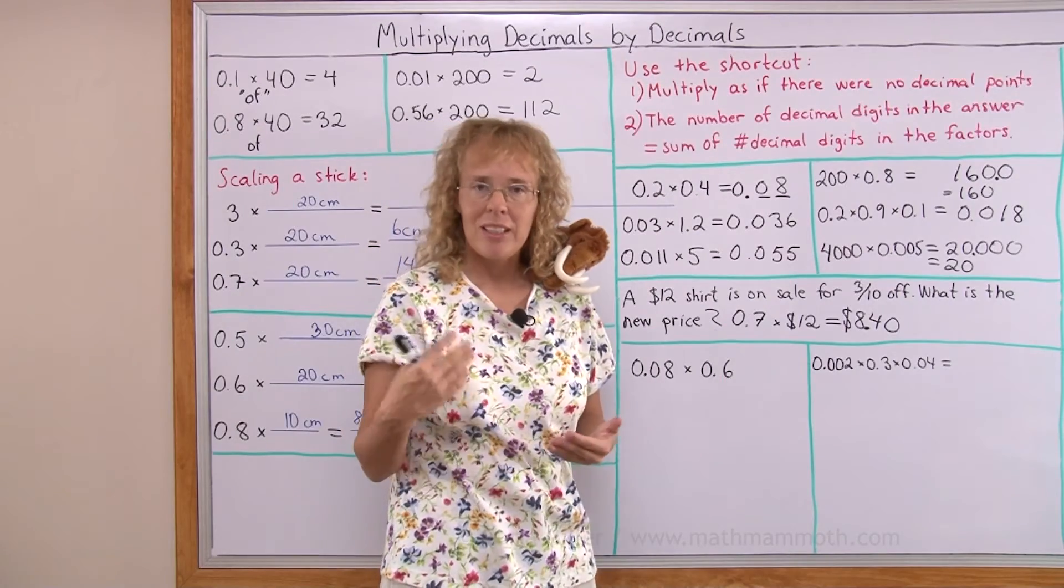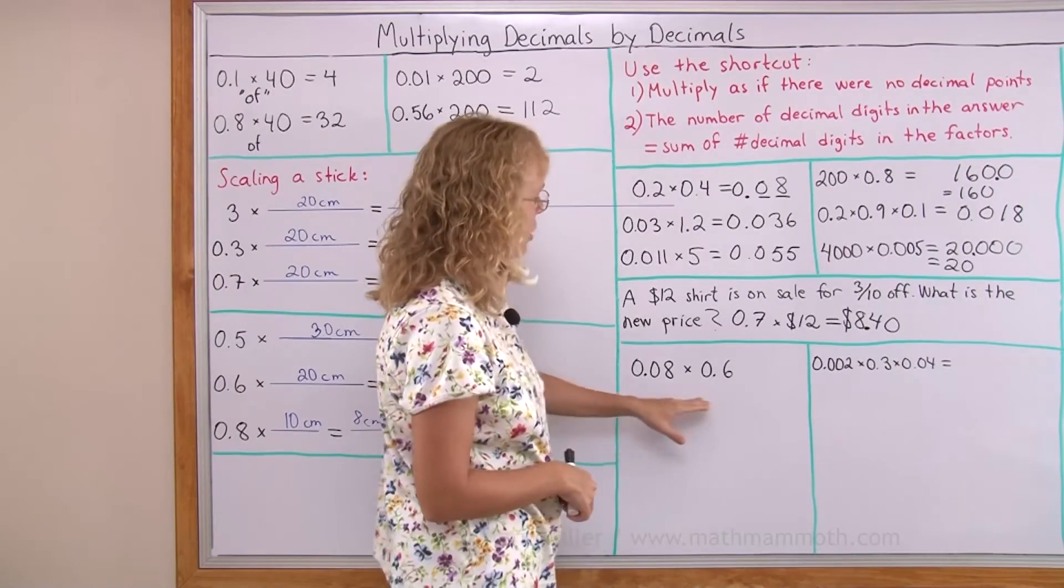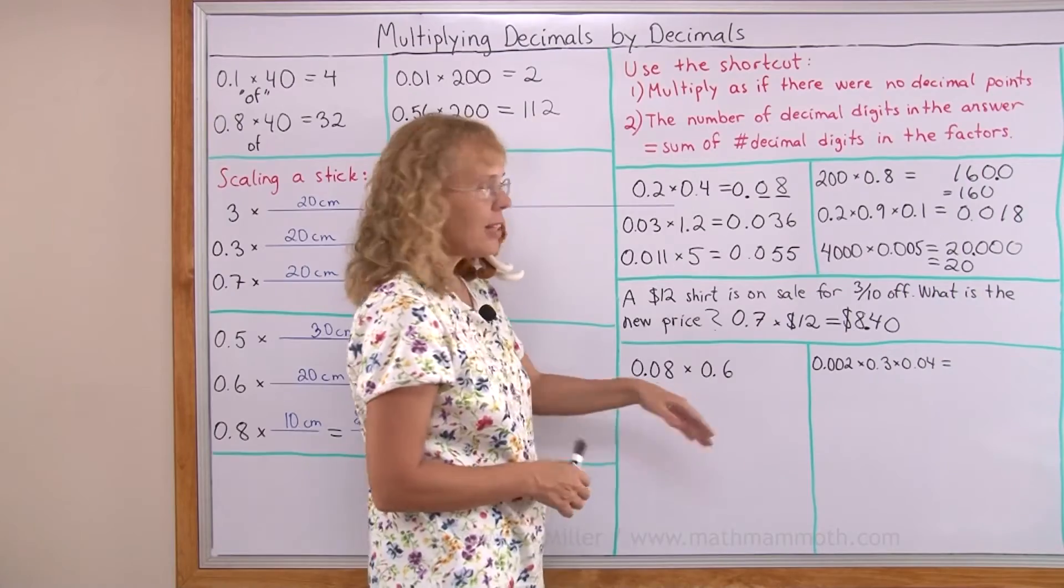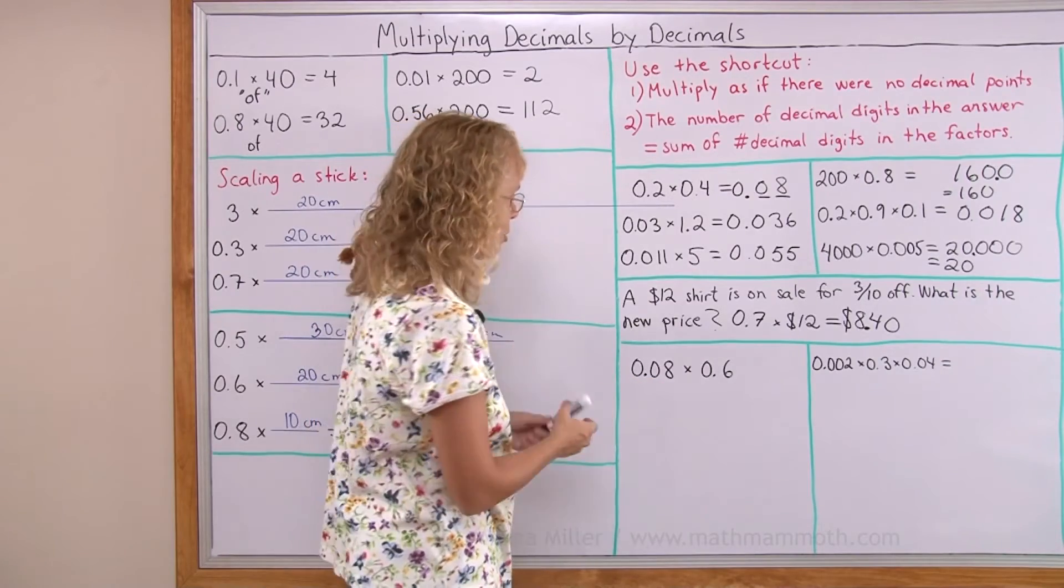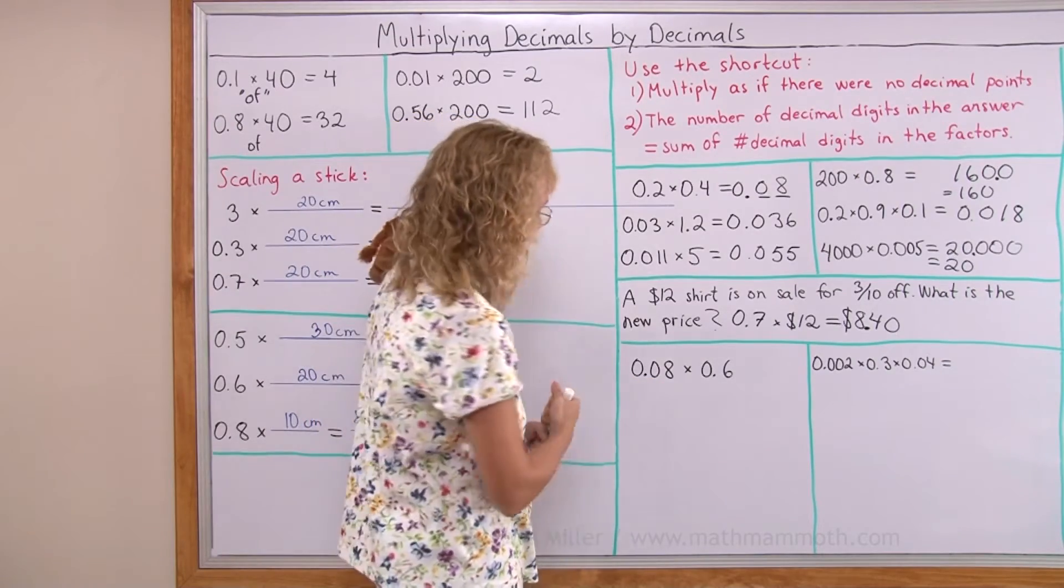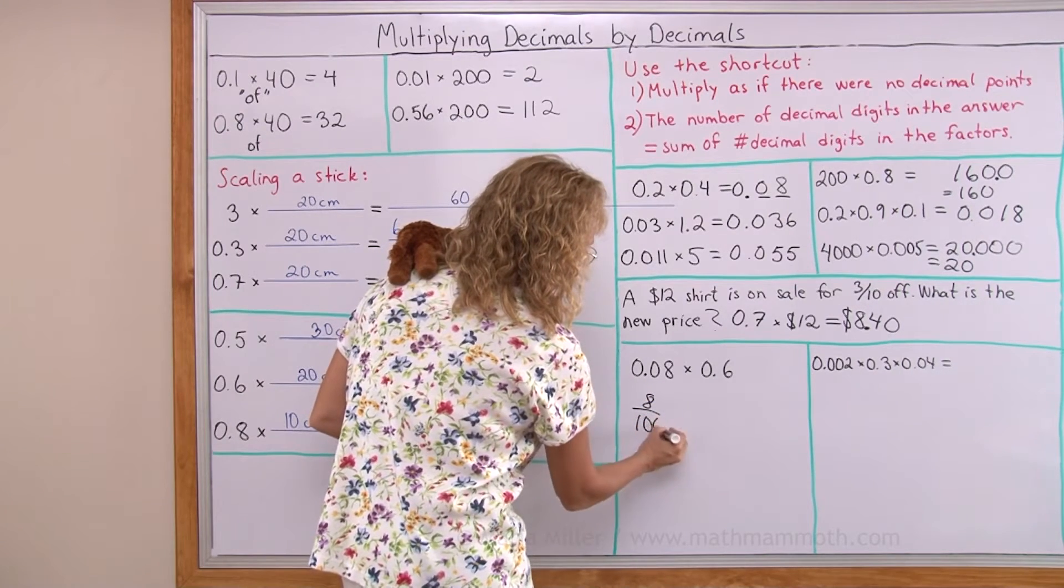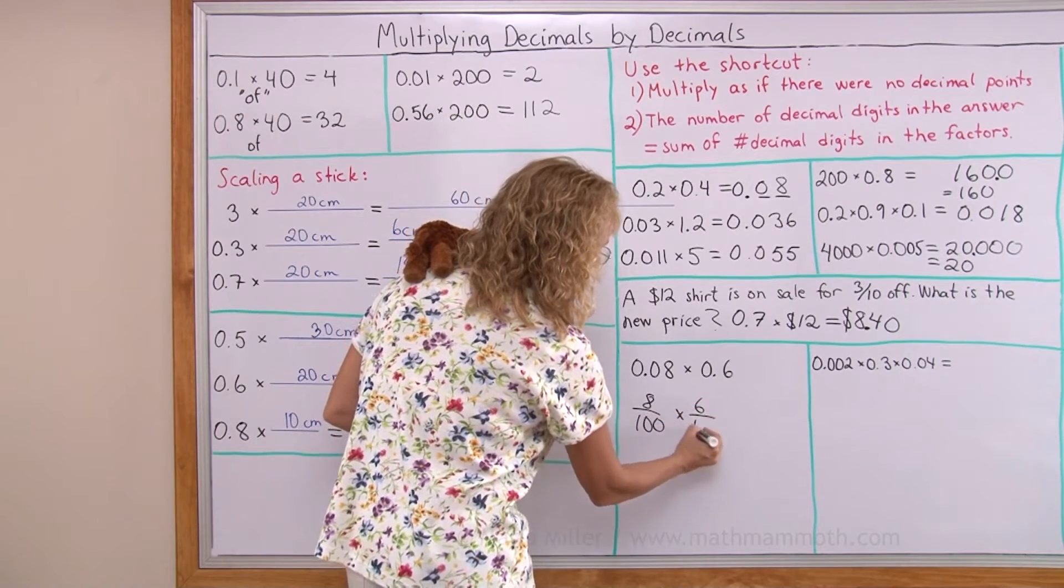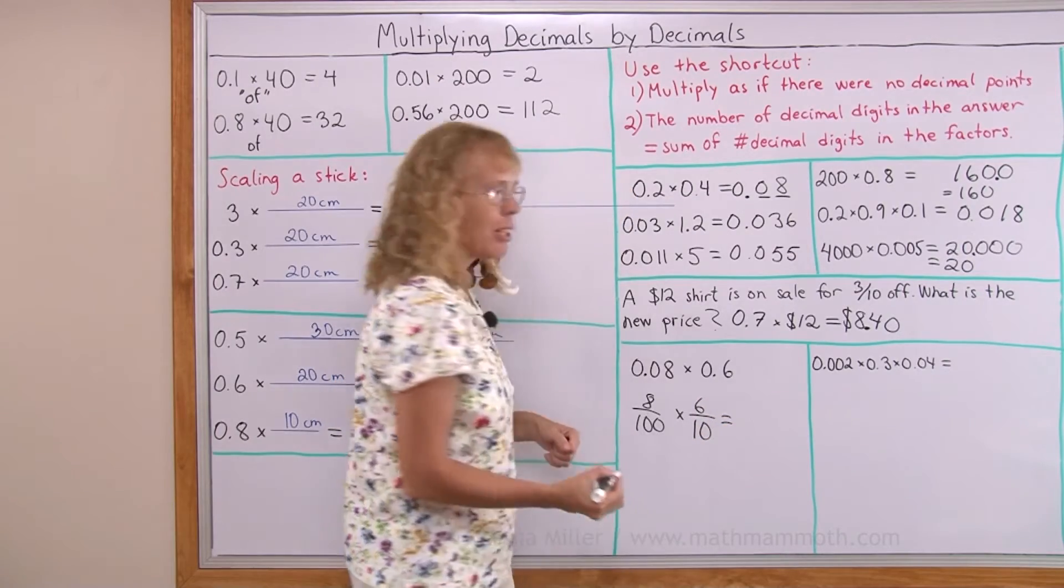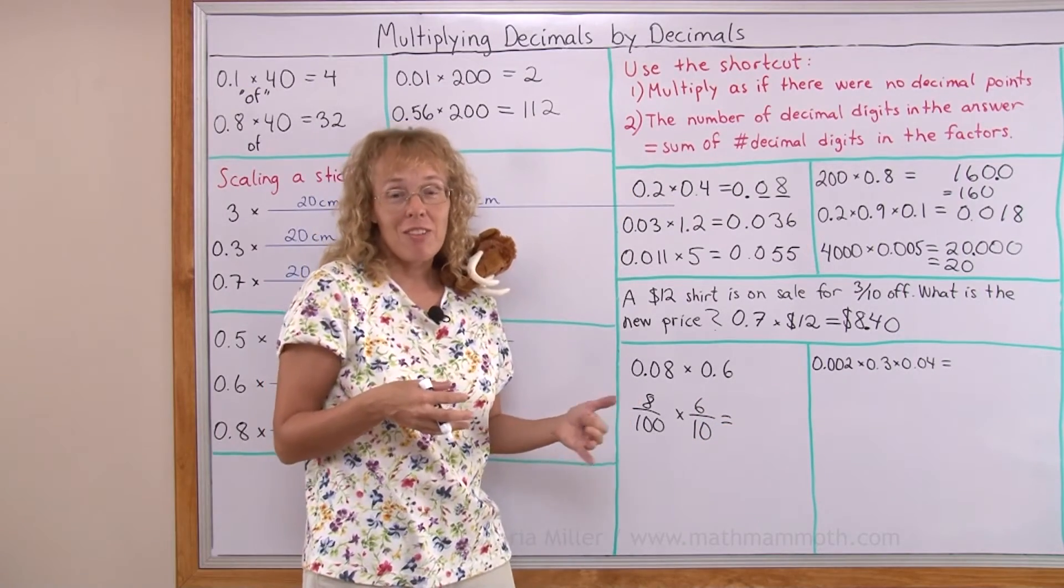Now, lastly, I will show you where this rule comes from. Here's two examples. And I will write them with fractions. Fractions will tell us the proof. Eight hundredths times six tenths. Now, when you multiply fractions, you might not have learned this yet. If so, don't worry about it.